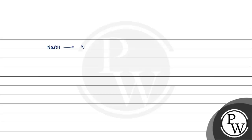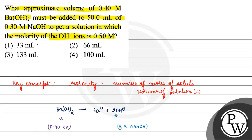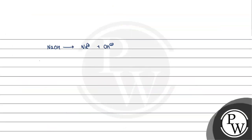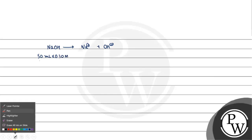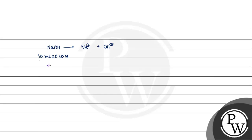Now for NaOH: NaOH gives Na⁺ and OH⁻. How many millimoles of NaOH do we have? It will be 50 ml × 0.30 molar = 15 millimoles. So according to stoichiometry, OH⁻ from NaOH is also 15 millimoles.